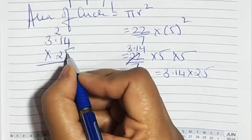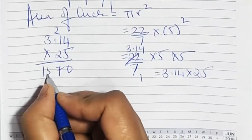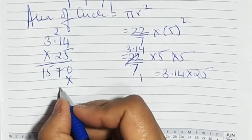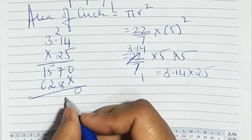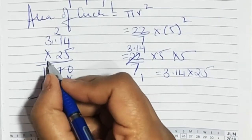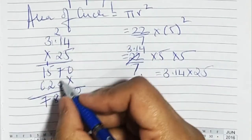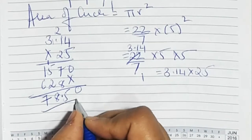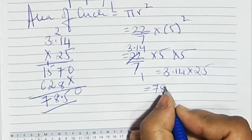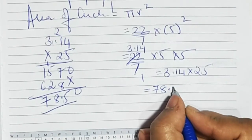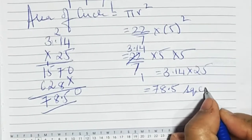Multiplying 3.14 into 25 step by step through the arithmetic, the final answer we get is 78.5 square centimetres.